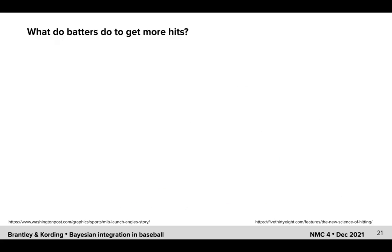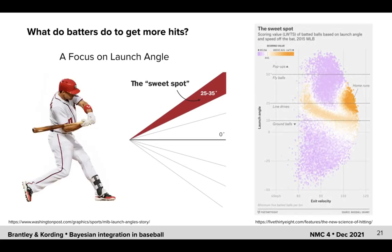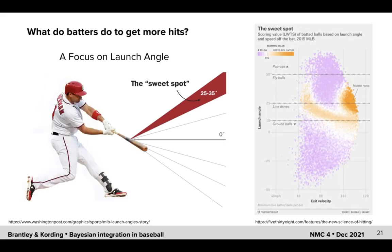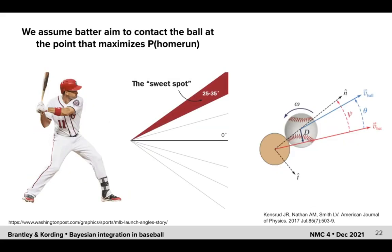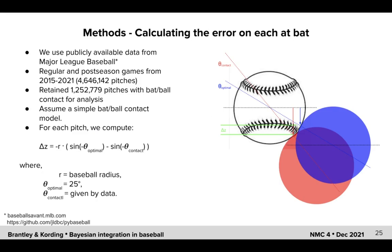So to address this, we ask: what do batters do to get more hits? Recently, many batters have shifted their mechanics to focus on the launch angle of the ball off of the bat, thus resulting in a high chance of getting a hit either within the park or as a home run. We assume that batters aim to contact the ball at the point that maximizes the probability of a home run.